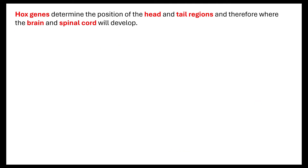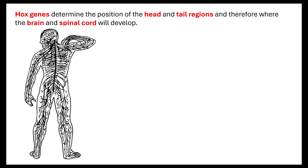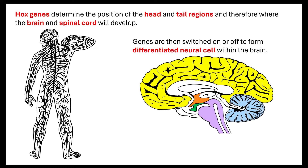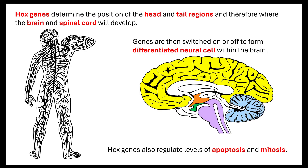Those hox genes determine the position of the head and tail region and therefore determine where the brain and spinal cord will develop. When we looked at the animal response topic area and the nervous system — our central nervous system, which is our brain and our spinal cord — if we look at the different structures of the brain, we understand that these hox genes code for transcription factors, and these transcription factors are about switching genes on and off, therefore forming differentiated neural cells within the brain.